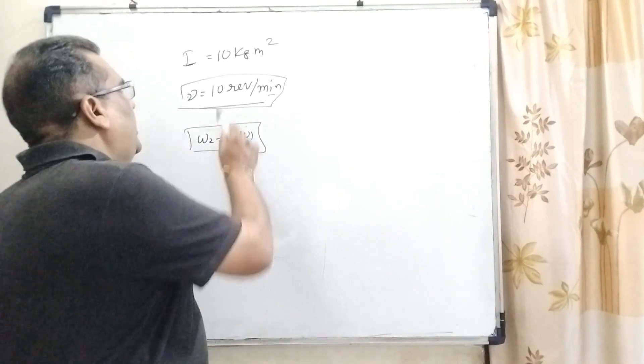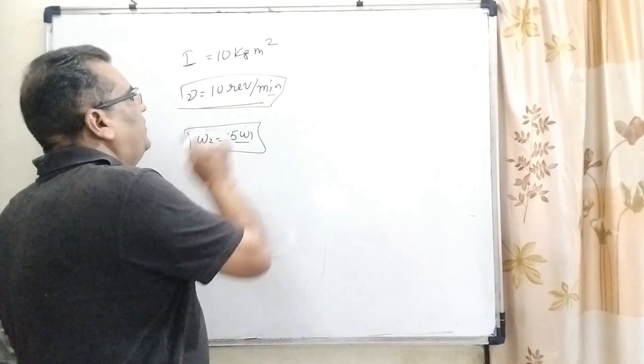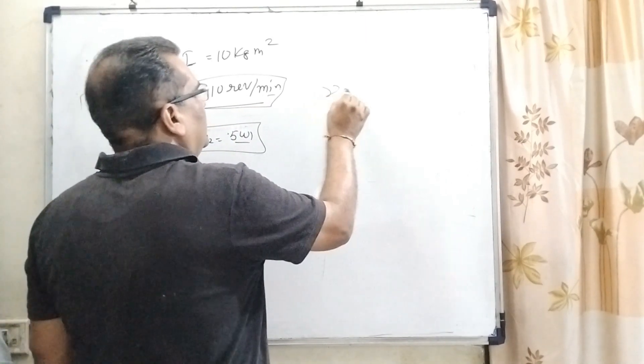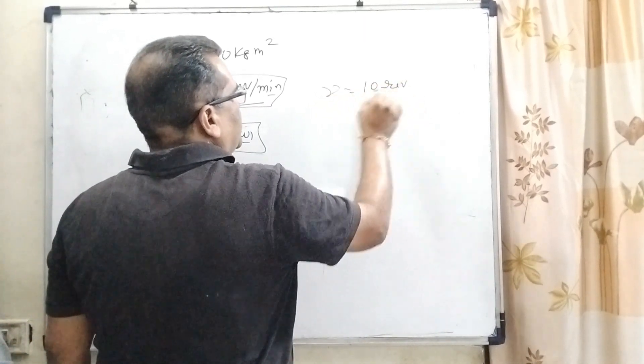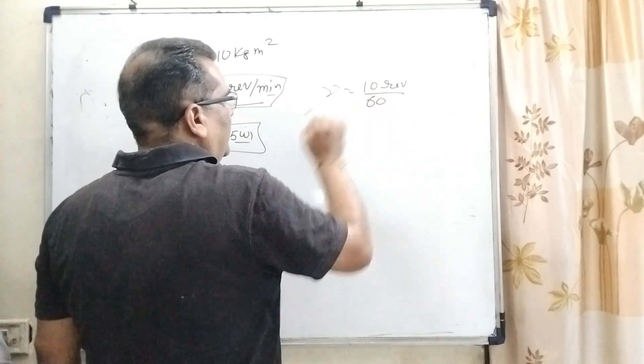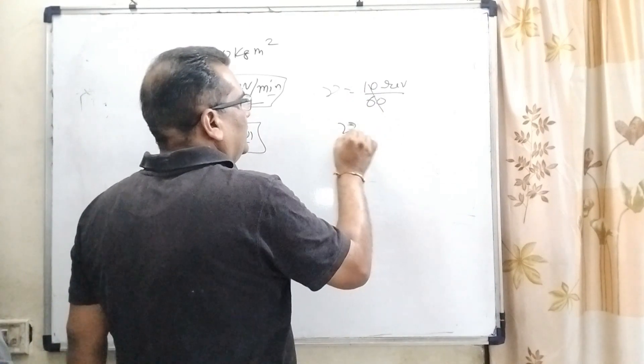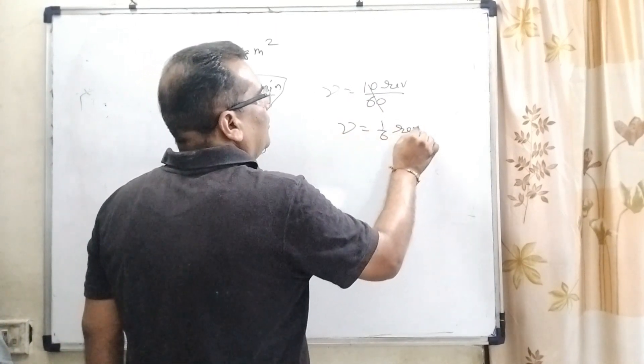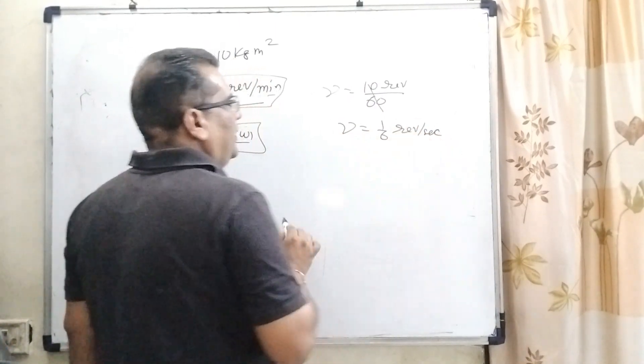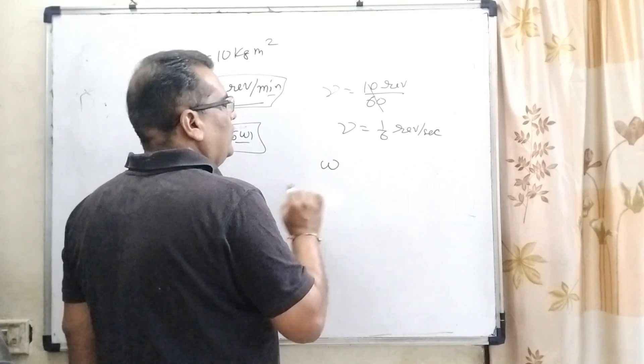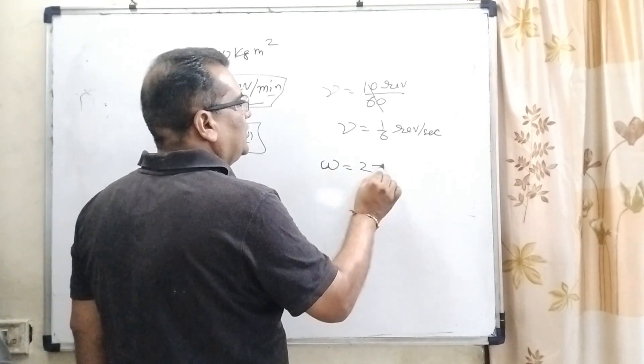In this question, we have given that frequency 10 revolution per minute convert into second. That is, 10 revolution per minute, that is, 10 divided by 60. Then we get 1 by 6 revolution per second. And now,